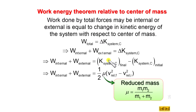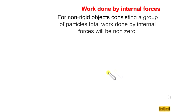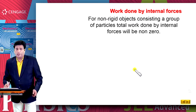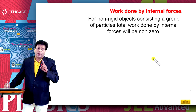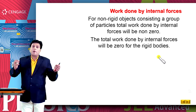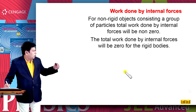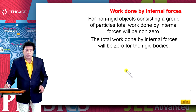For a non-rigid object, suppose we consider a non-rigid object consisting of a group of particles. In general, the displacement of different particles relative to the center of mass will be different. This will give non-zero work done due to the internal forces, so work done by internal forces in the system is not equal to zero. But if we consider a rigid body, the total work done by the internal forces will be zero, because for a rigid body the relative displacement between two particles does not change during motion or translation.